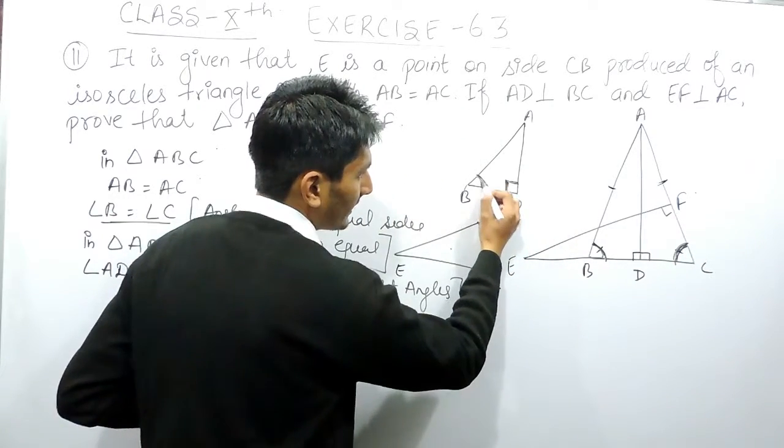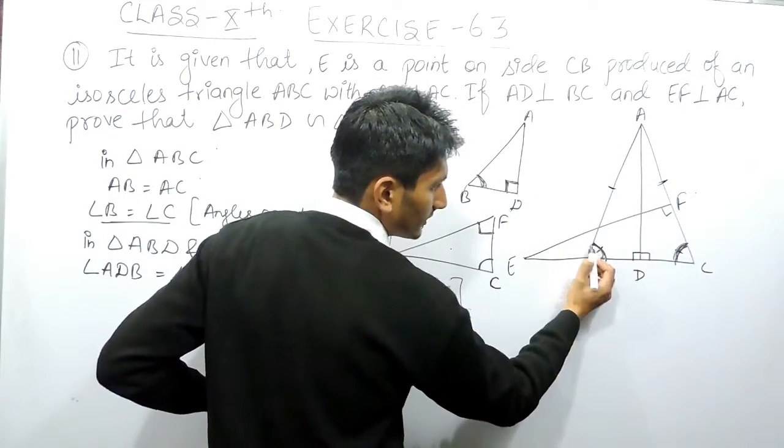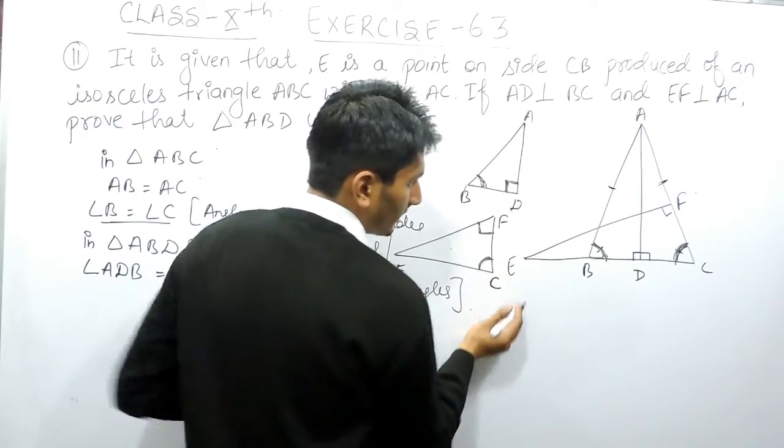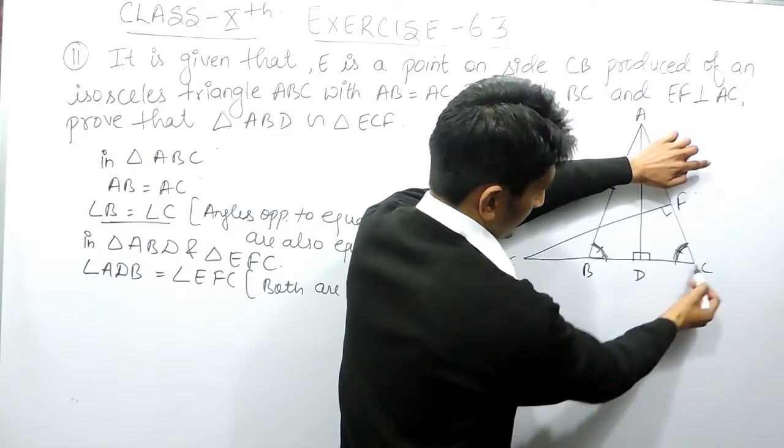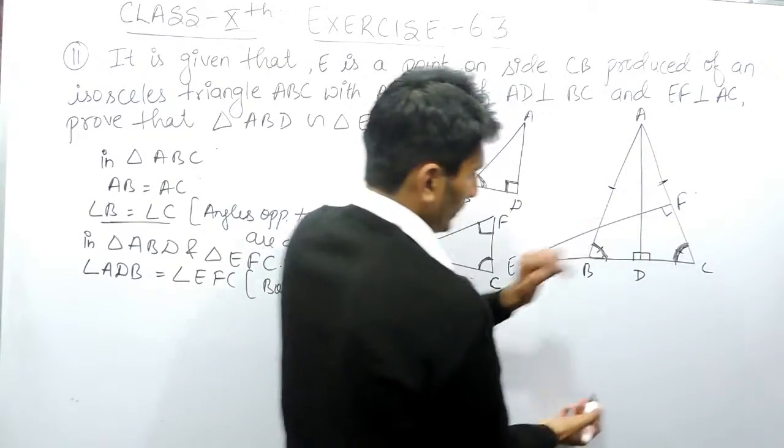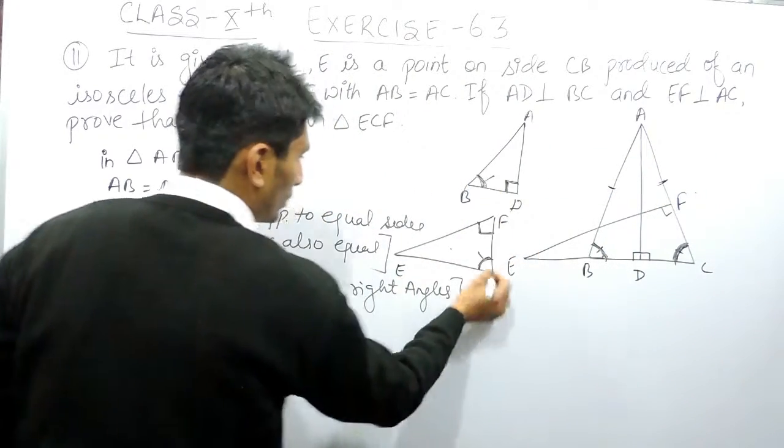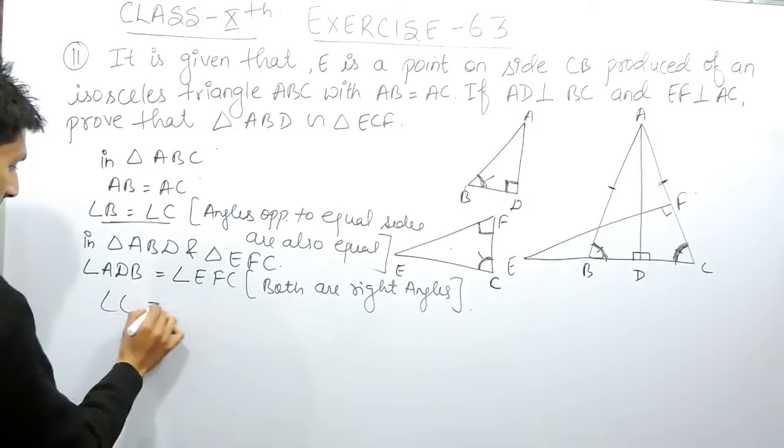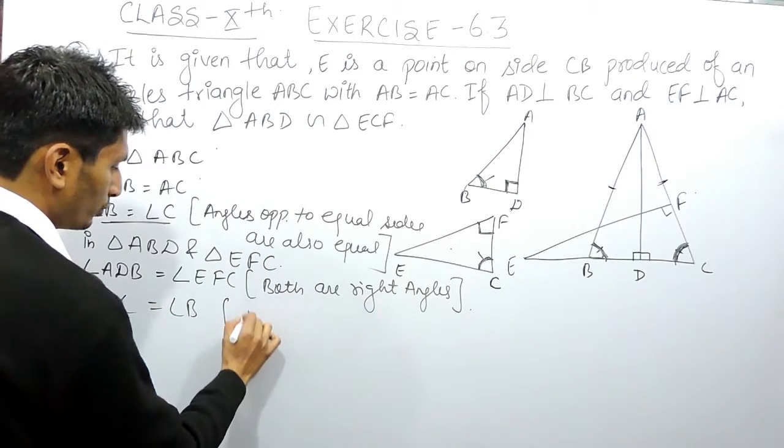So we can say that this angle in this triangle is equal to this angle. If I see in this triangle, these angles are equal. So angle C is given equal to angle B. So angle C must be equal to angle B. This we have proved.